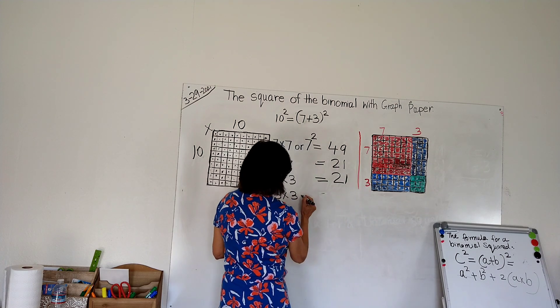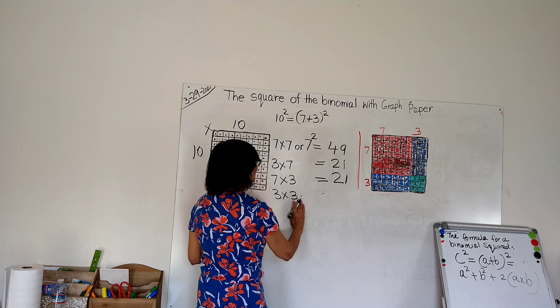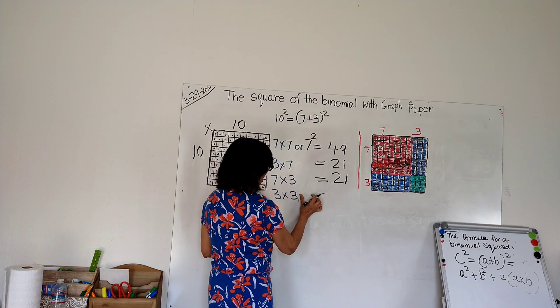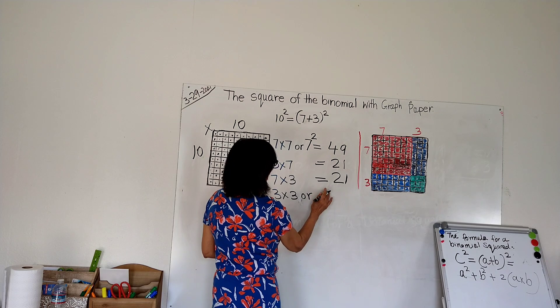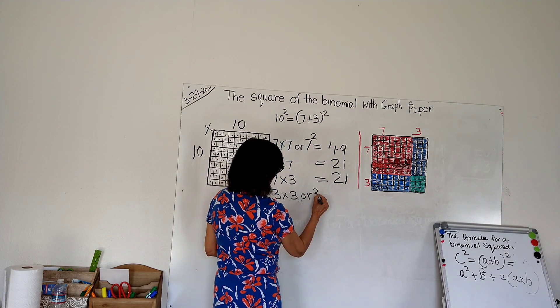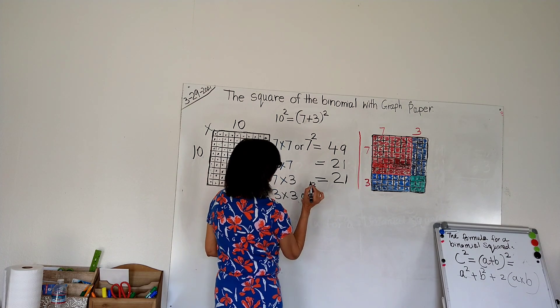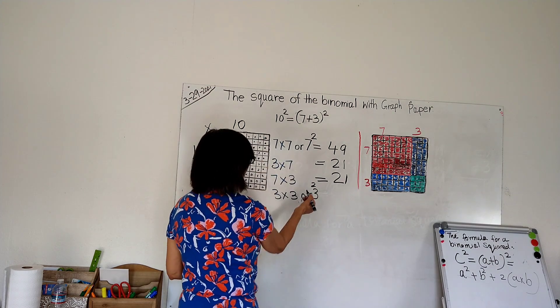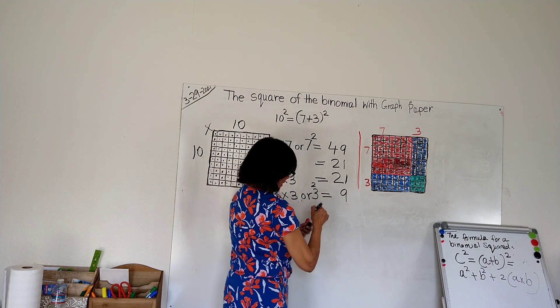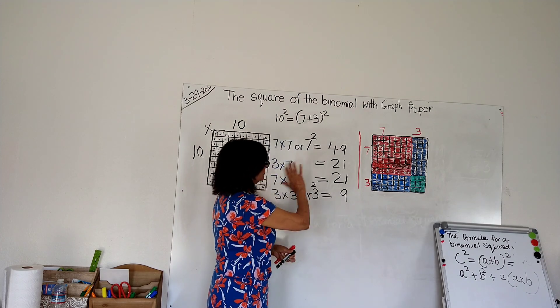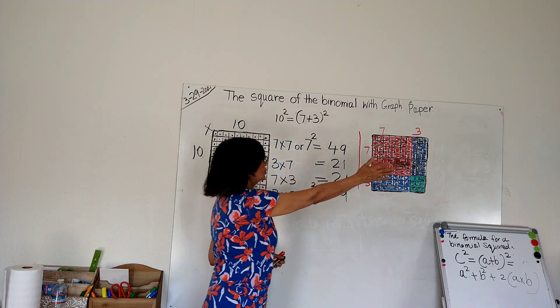Now we have a square of 3: 3 times 3, or 3 squared, equals 9. I don't have more space here, so let's move on to this part.